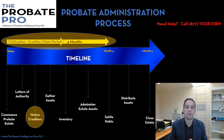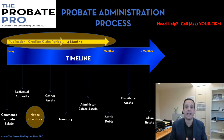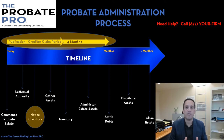Also, creditors that you may not be aware of are entitled to notice through publication. This is done through a legal notice in the legal news or in a general circulation newspaper within that area, to provide notice to any unknown creditors. Those could include Visa or credit card bills, medical bills, or even the neighbor down the street.